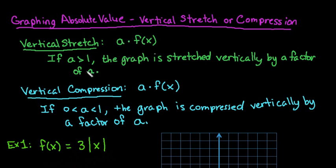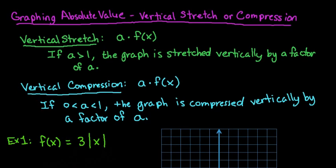Our term happens to be greater than 1. So if a happens to be like 2, 3, or 1.5, the graph is going to be stretched vertically by a factor of a. That means our output, or our y-coordinate, is going to be multiplied by 3 — or 2 times as much — whatever your factor of a is.